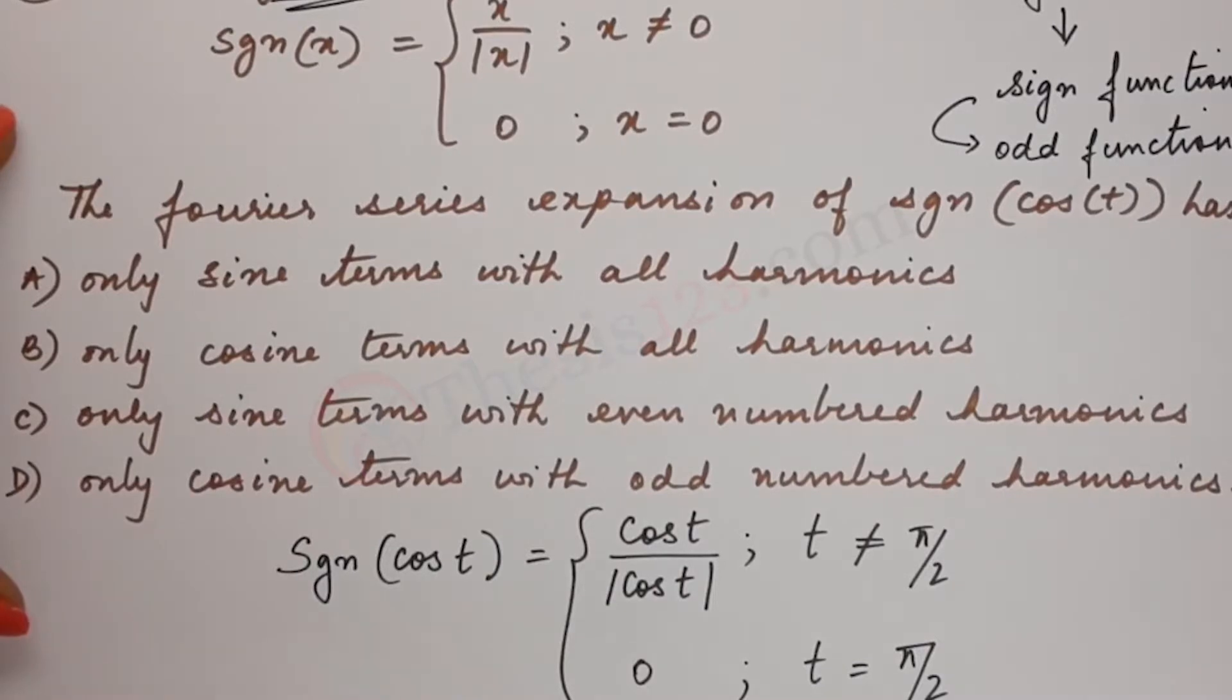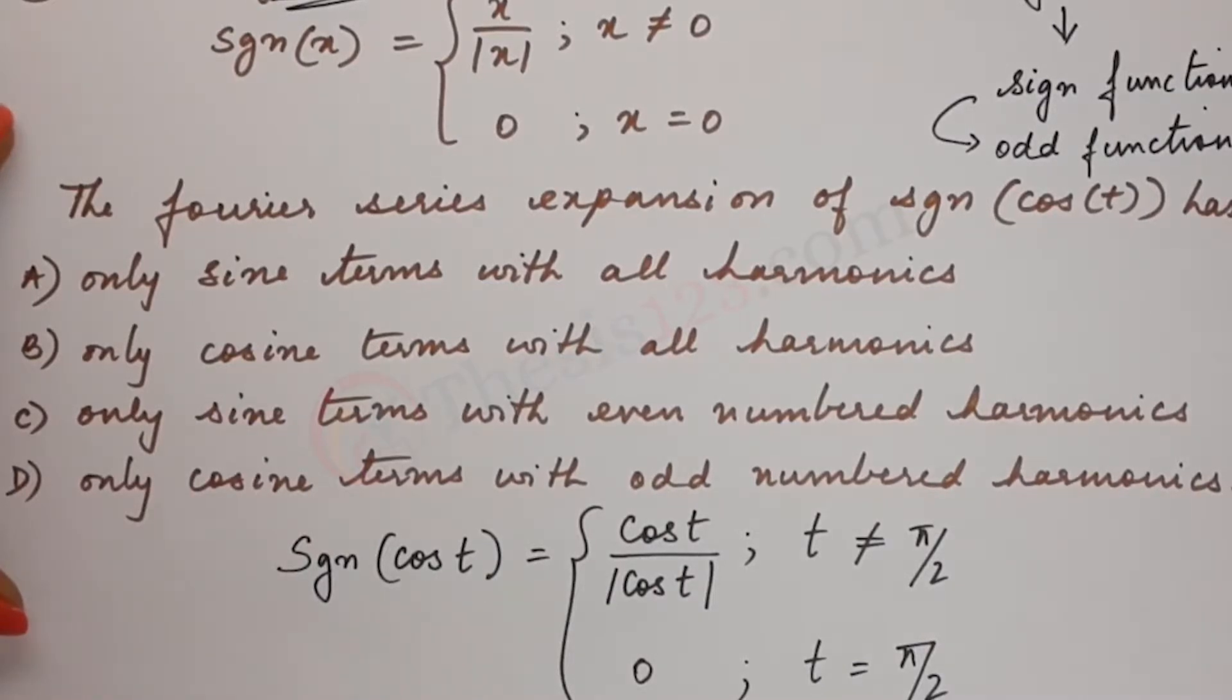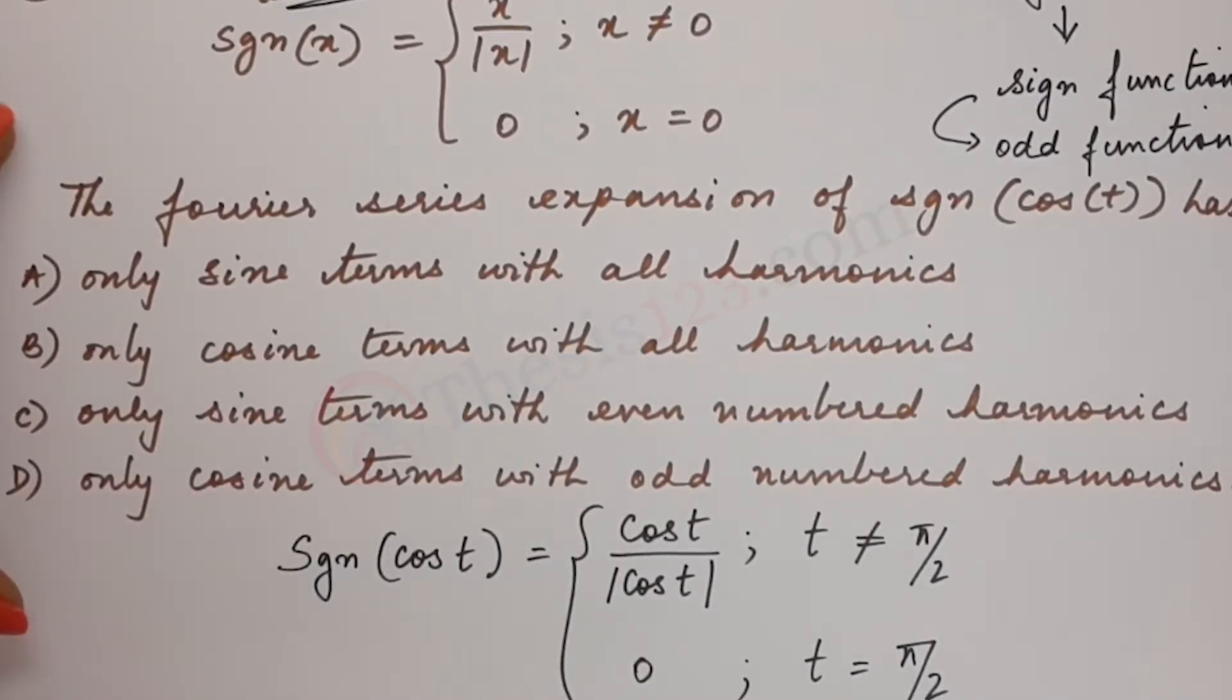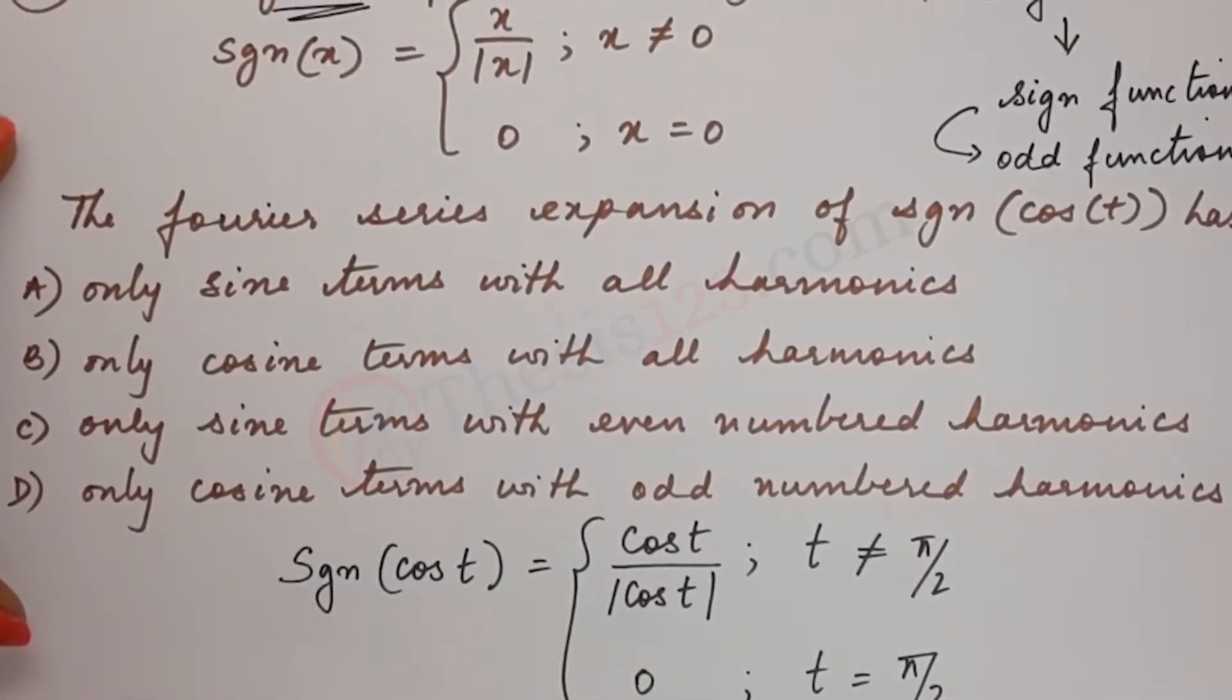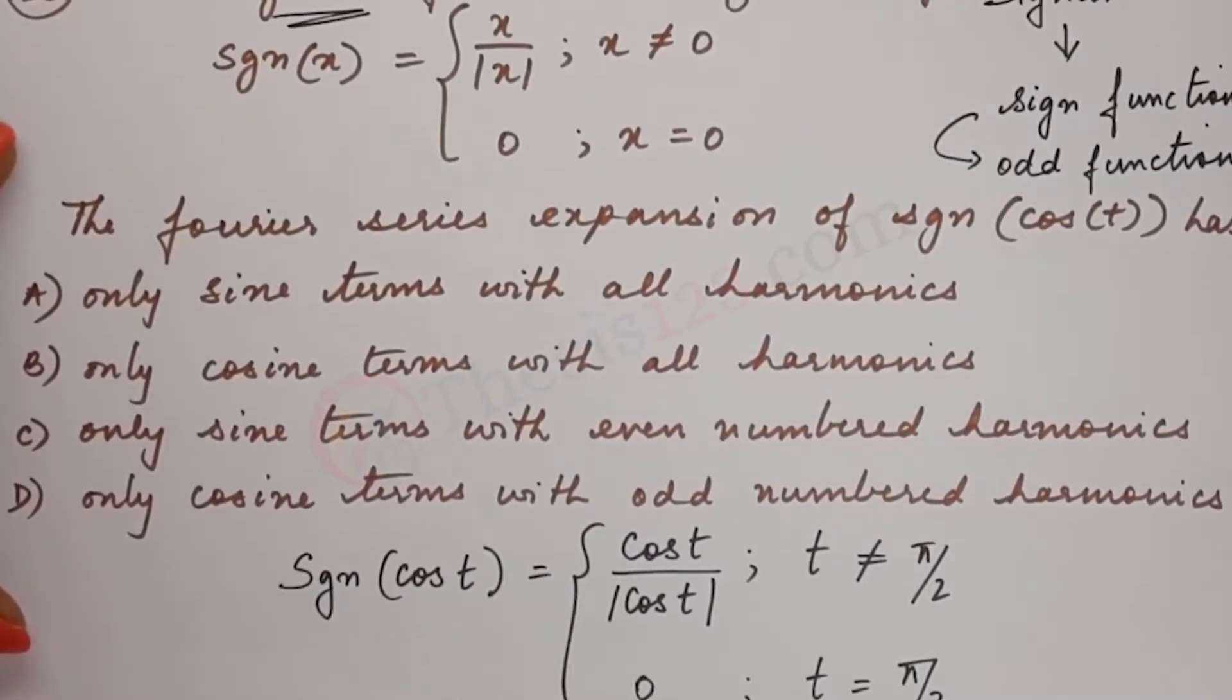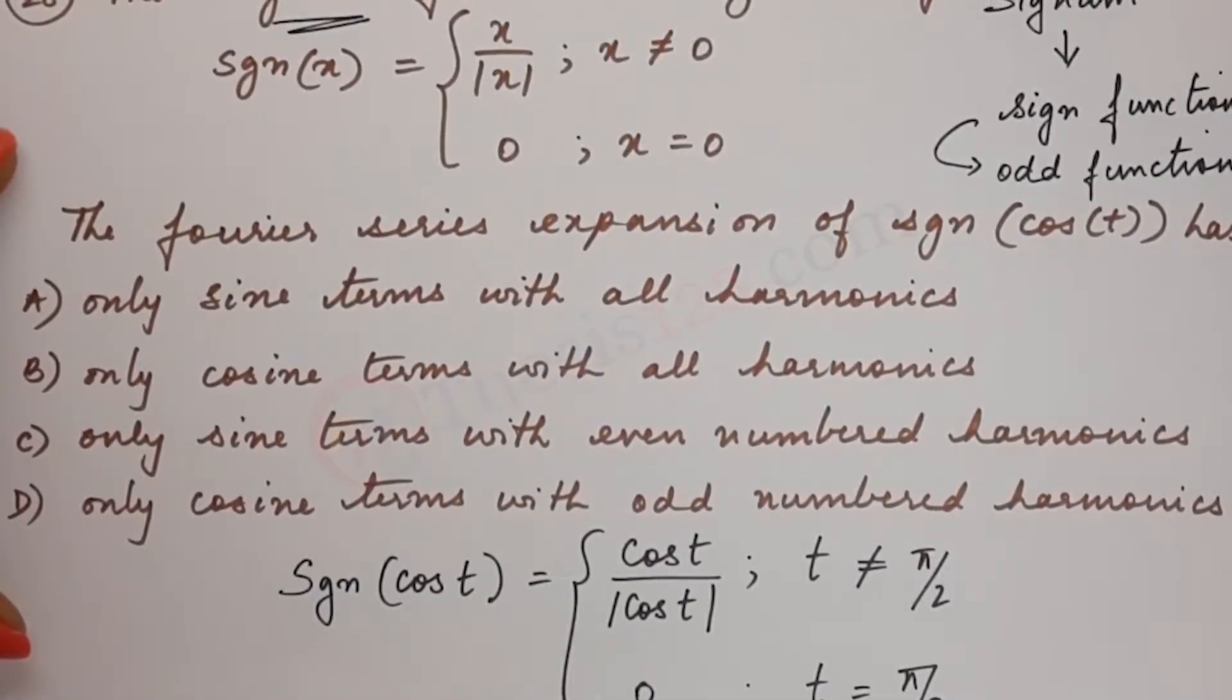So in order to solve this, let's draw the diagram for signum of cos t which takes only the sign value. Either it is positive or it is negative. And we also know that it comes to 0 at pi by 2.